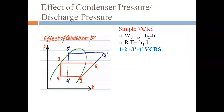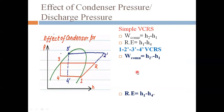In the simple VCRS red cycle — one, two, three, four — without changing condenser pressure, W compressor = h2 − h1 and refrigerating effect = h1 − h4. When condenser pressure is changed, point two shifts to higher pressure as two-dash, giving new cycle: one, two-dash, three-dash, four-dash. In this case, W compressor = h2-dash − h1, and refrigerating effect = h1 − h4-dash.